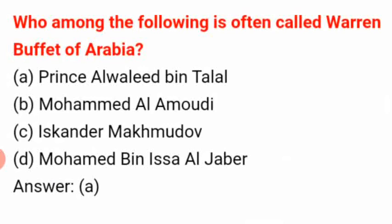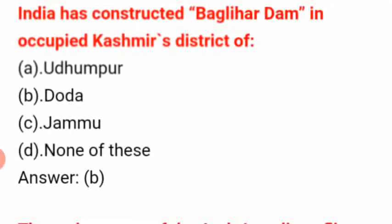Who among the following is often called the Warren Buffett of Arabia? The answer is A: Prince Alwaleed bin Talal. India has constructed the Baglihar Dam in occupied Kashmir's district of B: Doda.